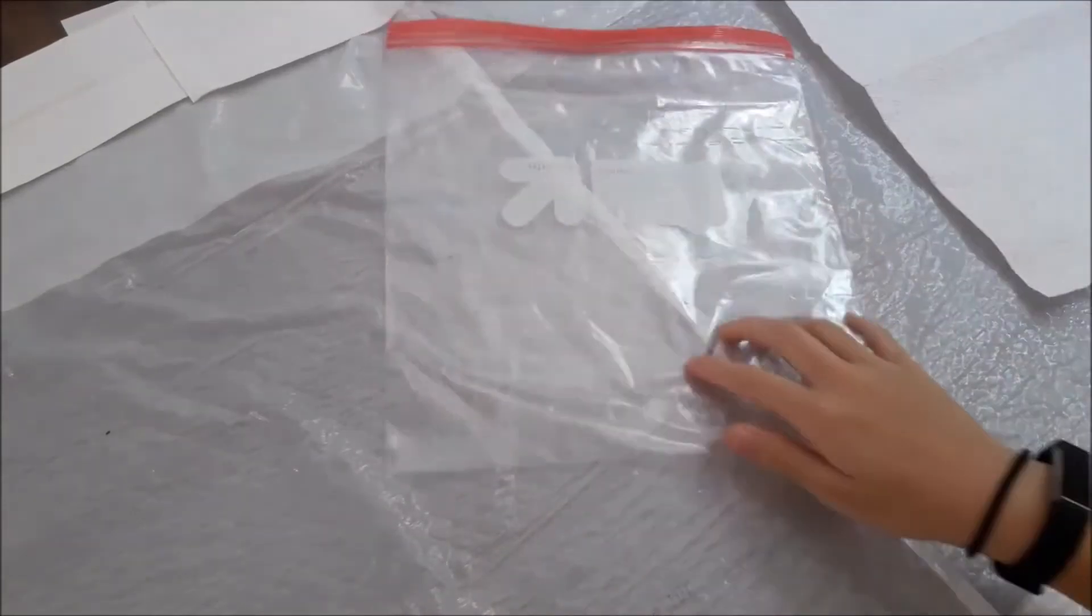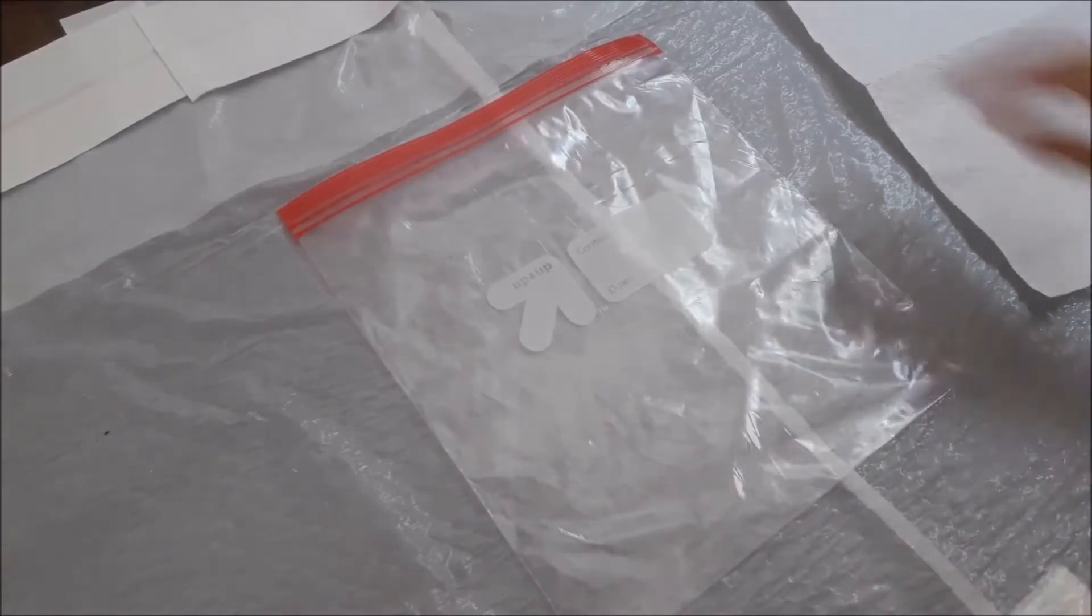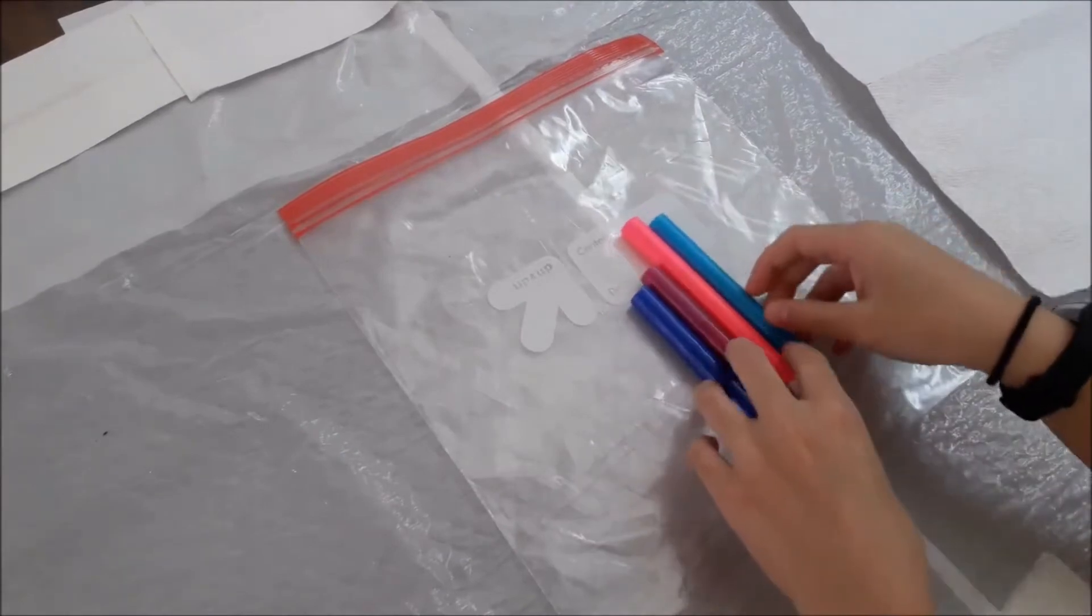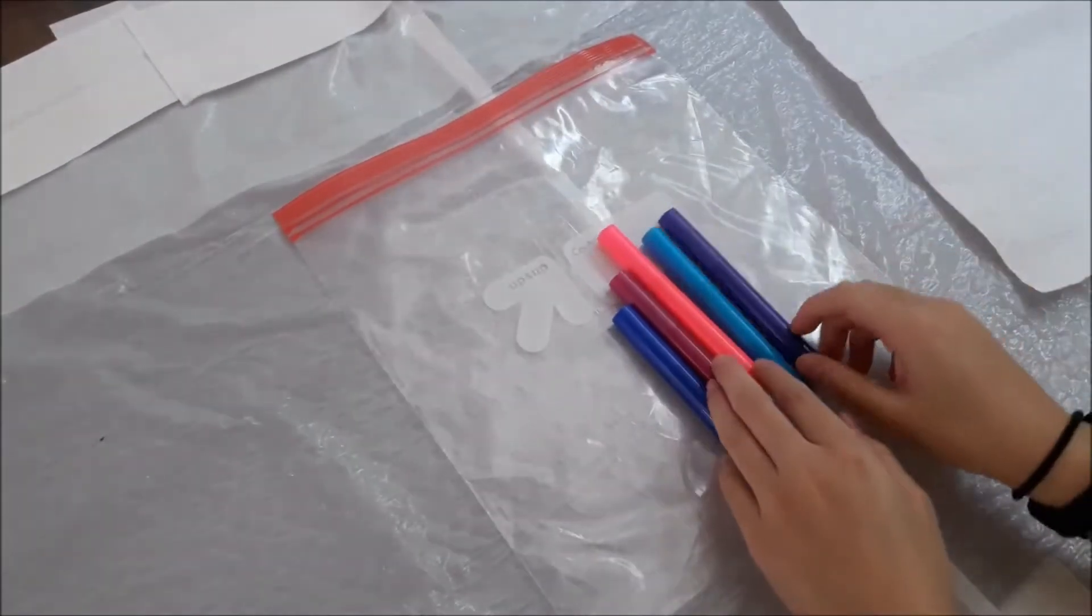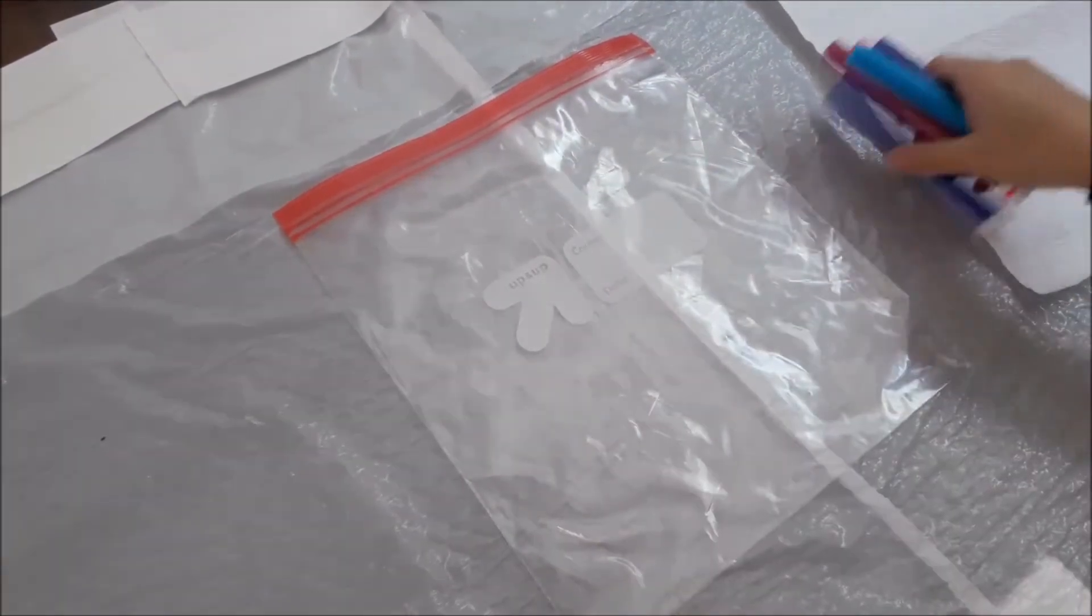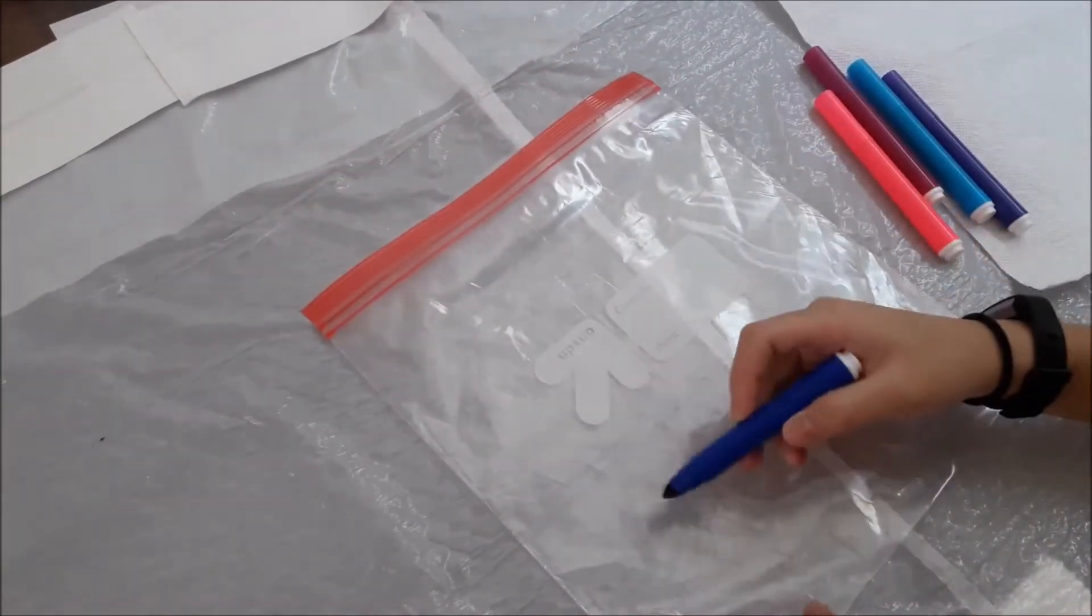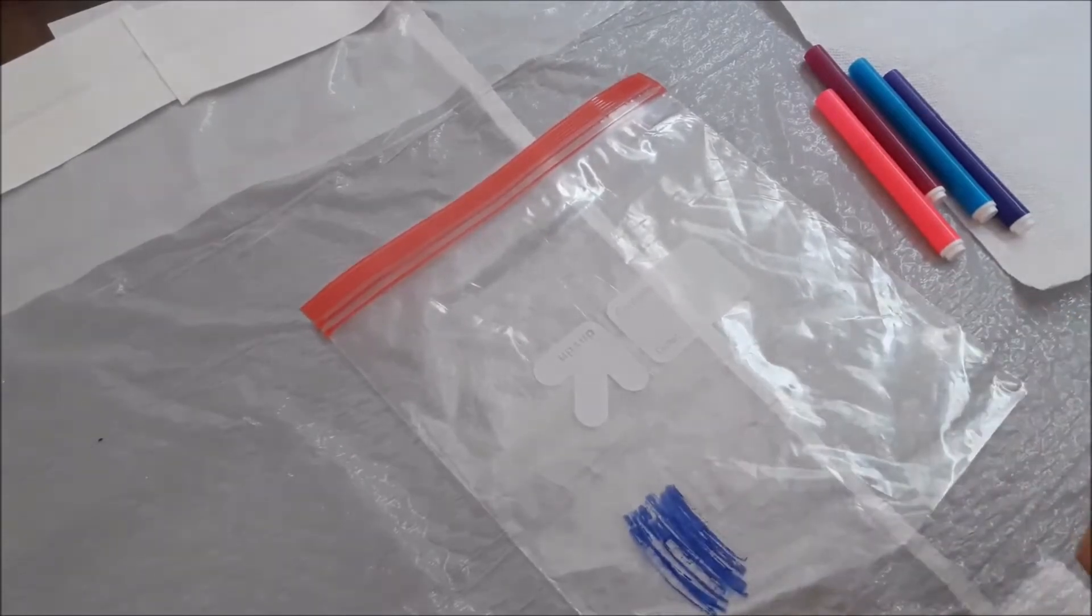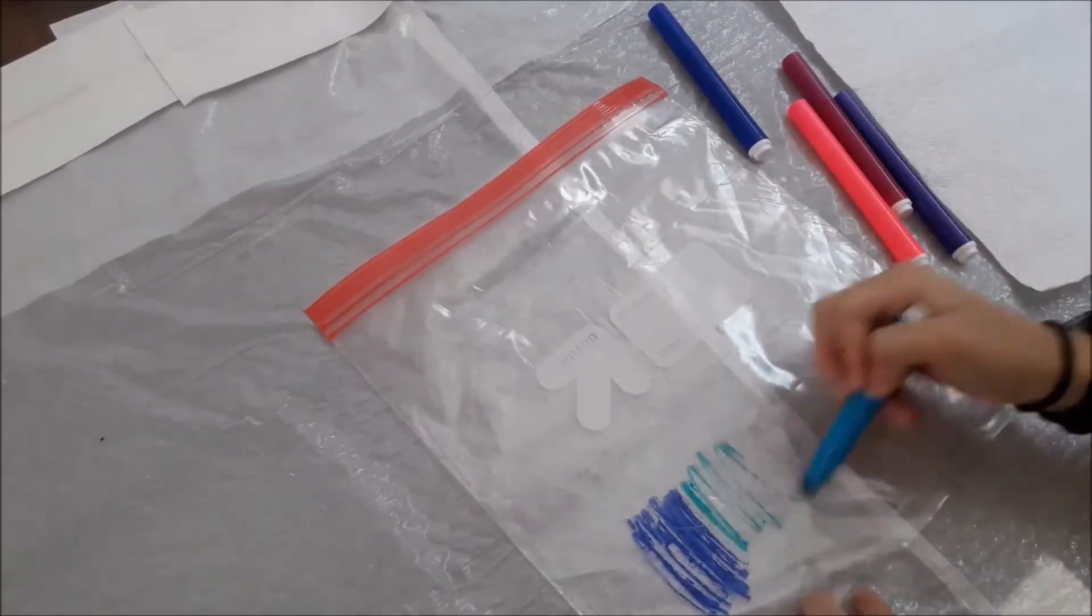First, you are going to need to use your Ziploc bag. Then you're going to want to get your markers of any choice. Once you have all your markers, you can start drawing on your Ziploc bag. You could choose any design you want, but for this phone case that I chose to do, I decided to blend all of them.